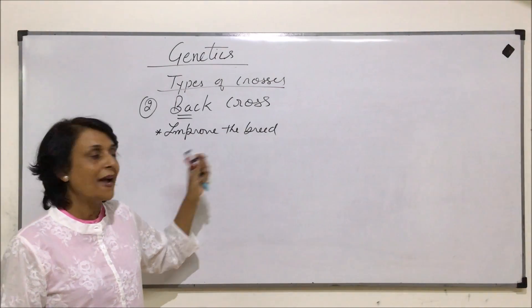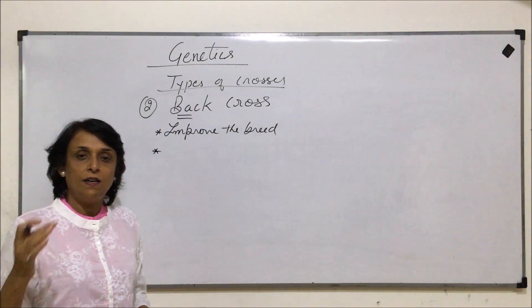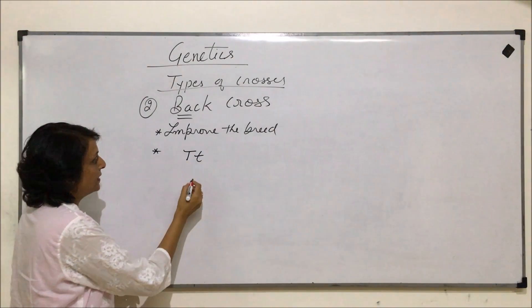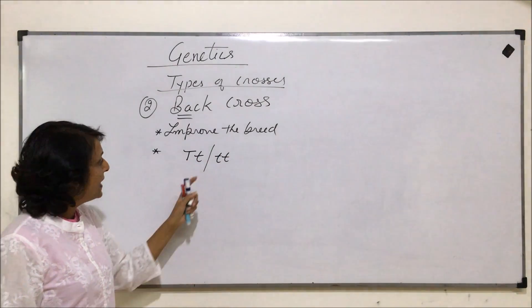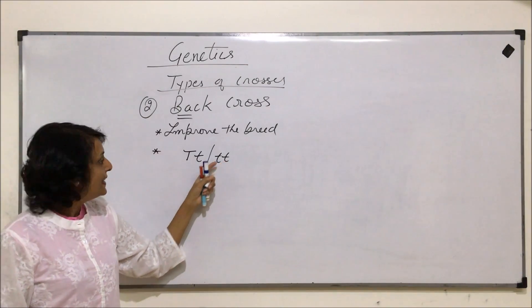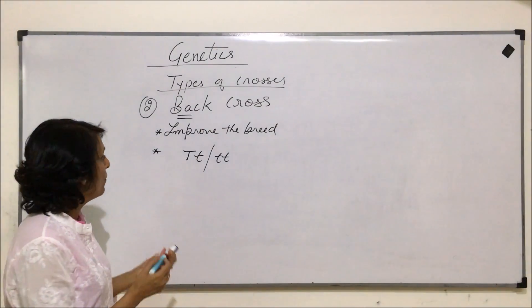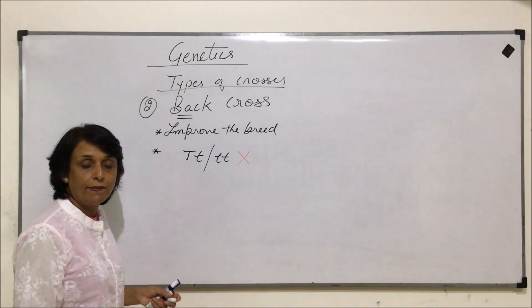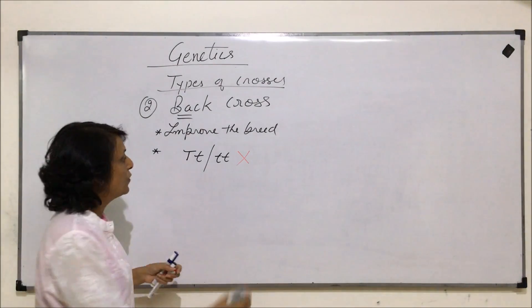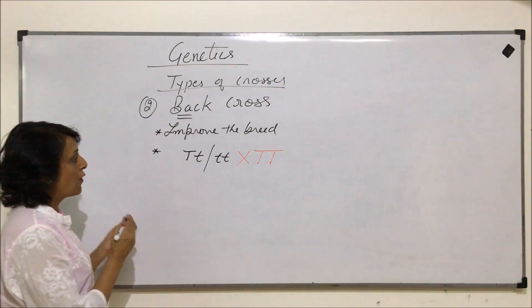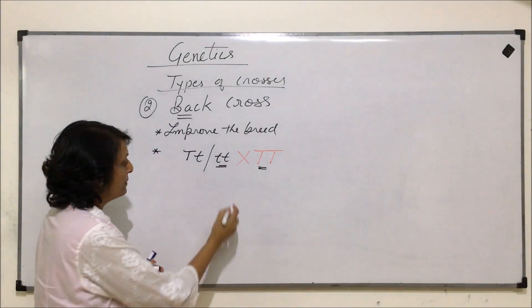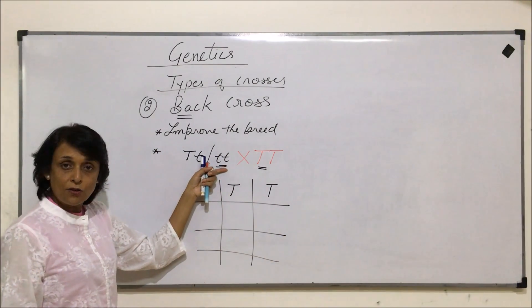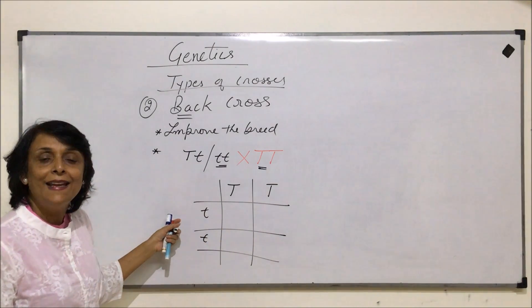There are three very important examples when we talk of back cross. Suppose one organism is heterozygous and another organism is homozygous recessive, and we want that in the next generation these recessive traits should not be shown or exhibited. In this back cross, whichever organism whose breed is to be improved must be crossed with one of the parents, and this time the parent is going to be homozygous dominant.